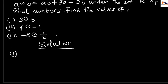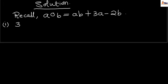For the first one, we recall the formula we are given. Remember, our formula is a○b = ab + 3a - 2b. So for 3○5, we have 3○5.